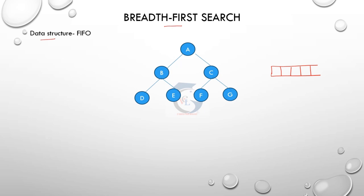Breadth-first search uses the queue data structure, which follows first in, first out — FIFO. The first element inserted is the first to be deleted. For example, like a train ticket reservation, the first person in line gets the first available ticket. This is the FIFO concept, and BFS performs breadth-wise visits.